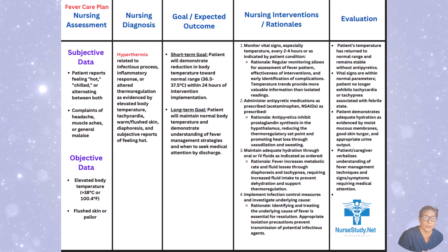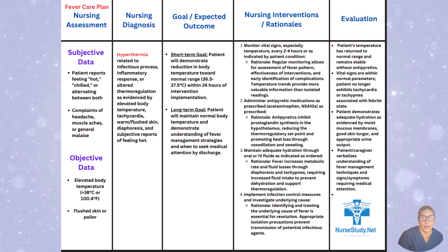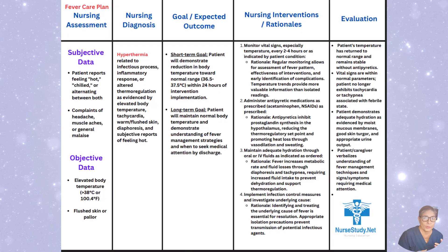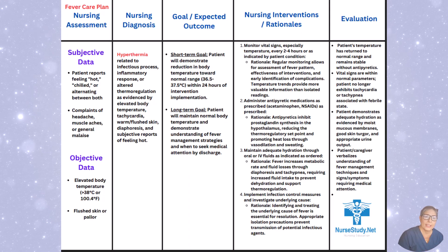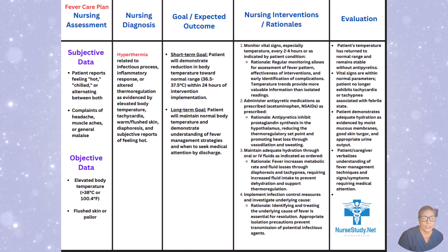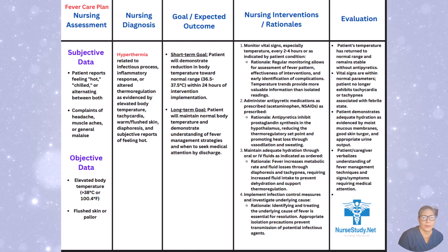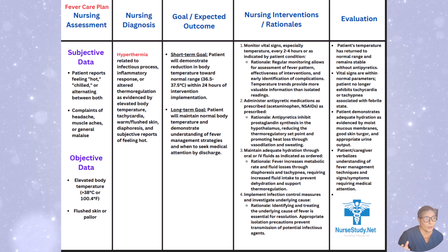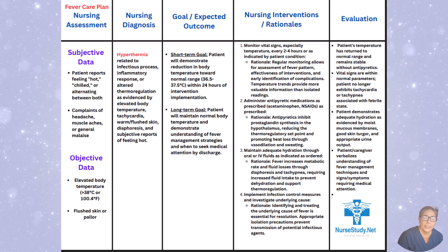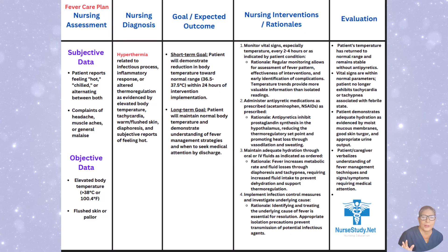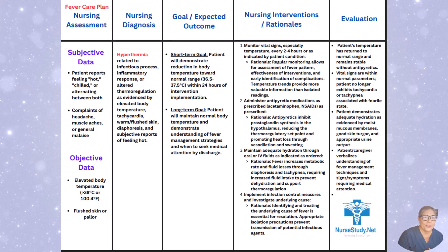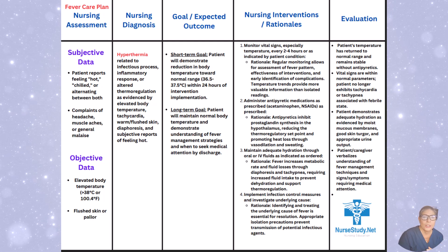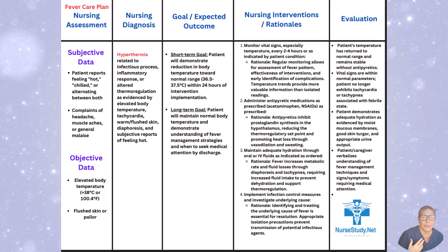For nursing interventions: first, monitor vital signs, especially temperature, every two to four hours or as indicated by the patient's condition and your facility's guidelines. The rationale is that regular monitoring allows for assessment of fever pattern, effectiveness of interventions, and early identification of complications. Temperature trends provide more valuable information than isolated readings, so if you administer something for fever, reassess temperature sooner rather than later — sometimes 30 minutes or an hour after.